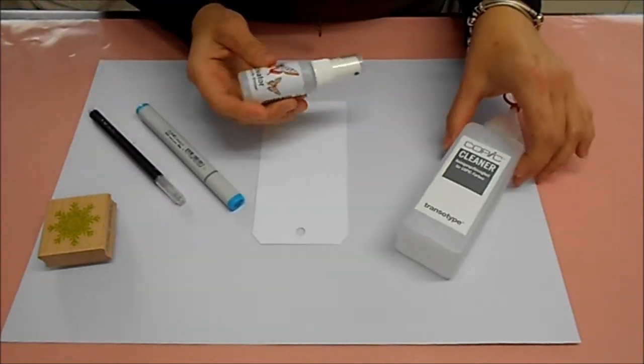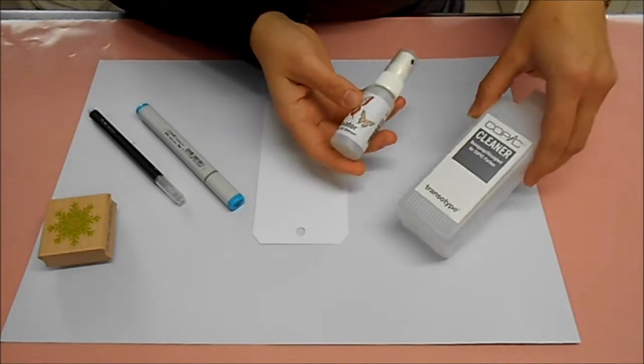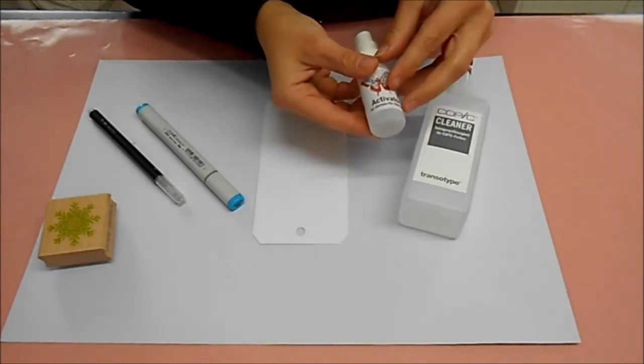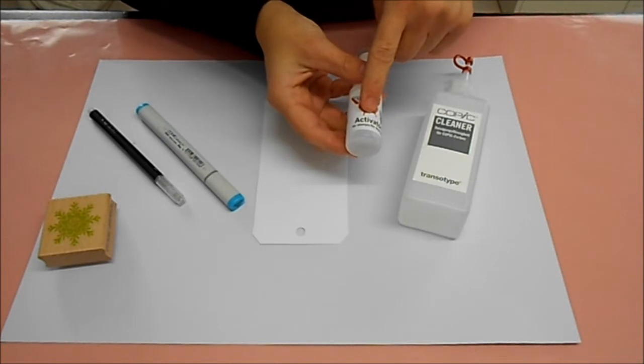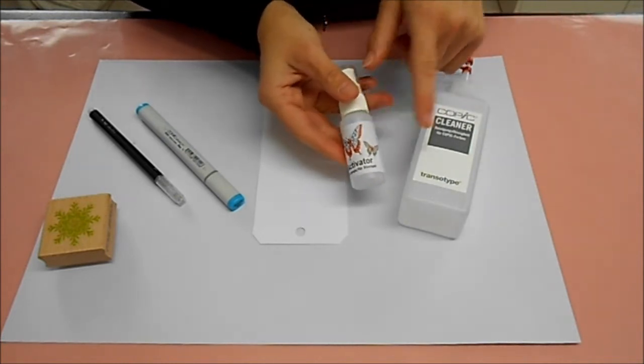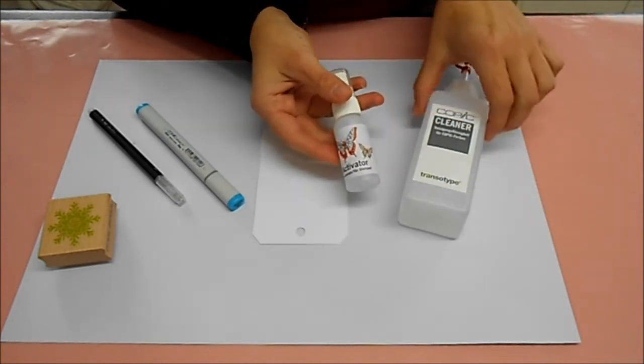First of all I would like to tell you that cleaner from Copic is the same fluence that is in the activator. So when your bottle is empty you can refill the bottle with the cleaner from Copic.